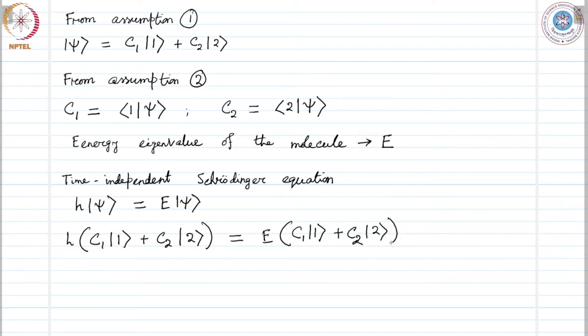Now if we want to solve this Schrodinger equation, we project this equation onto states one and two. What do we mean by doing that?